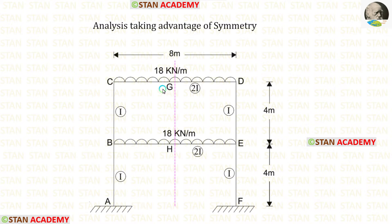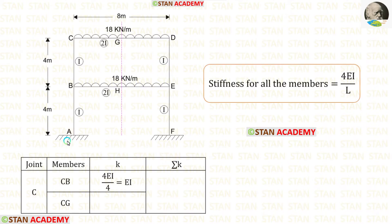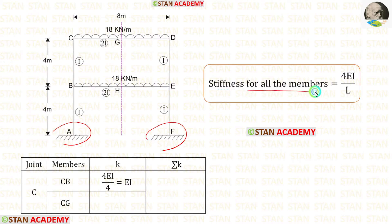Let us name the center of beam CD as G, and the center of beam BE as H. In this frame, we have only fixed supports, so the stiffness formula for all of the members will be 4EI upon L.